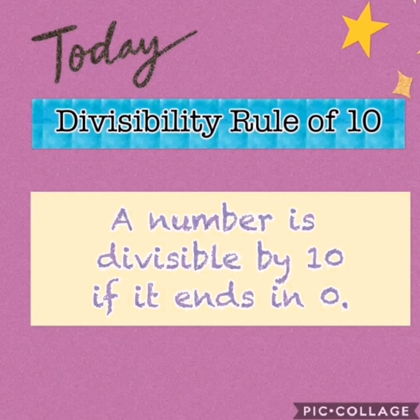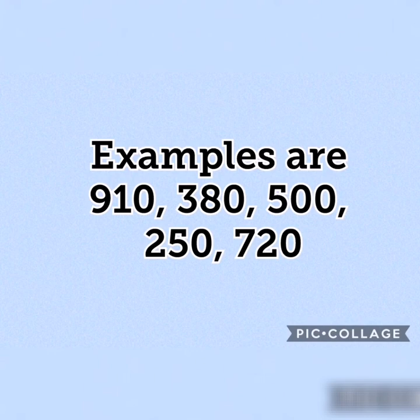Next is the Divisibility Rule of 10: A number is divisible by 10 if it ends in 0. It's very easy, kids. If the number ends in 0, then it is divisible by 10. Examples are 910, 380, 500, 250, and 720. All these numbers end in 0. Thus, it is divisible by 10.